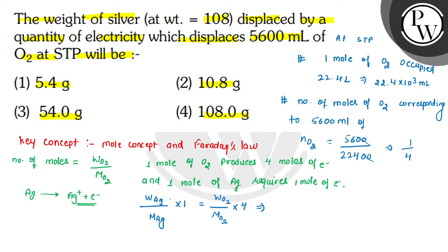So weight of silver divided by 108 times 1 equals 1/4 times 4. From here, weight of silver equals 108 grams.